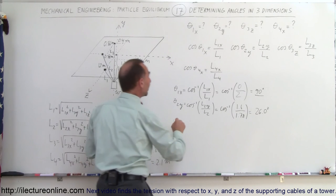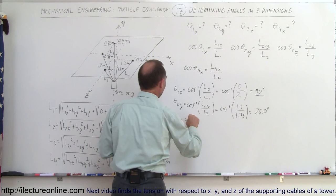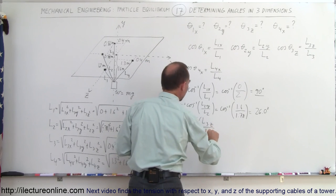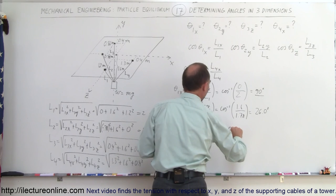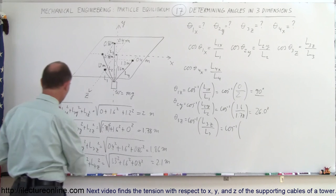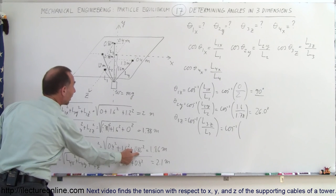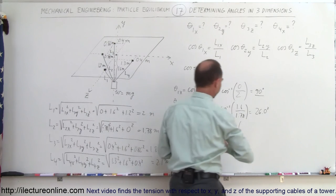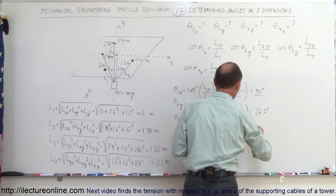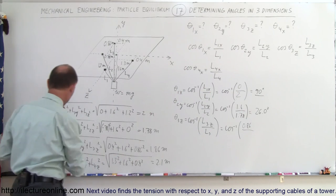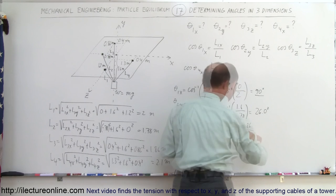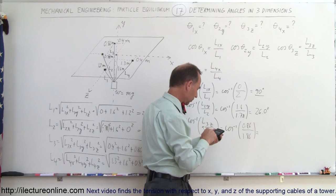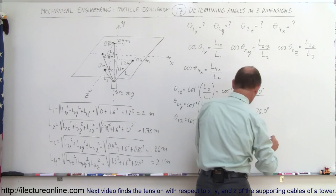Now for theta sub 3 relative to the z-axis. This equals the arccos of L3z divided by L3, which is the arccos of L3 in the z-direction. L3 is 0.86 meters away from the origin in the z-direction, and the magnitude of L3 is 1.86 meters. So 0.86 divided by 1.86, taking the arccos, gives us 62.5 degrees.